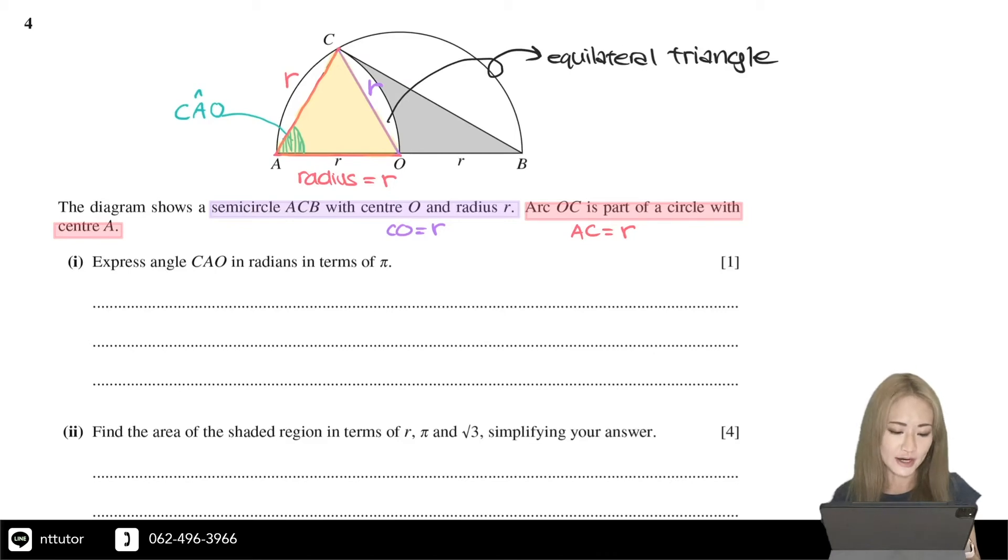So for an equilateral triangle, all the angles must be 60 degrees, and 60 degrees in radians is π over 3 because π is equal to 180 degrees.